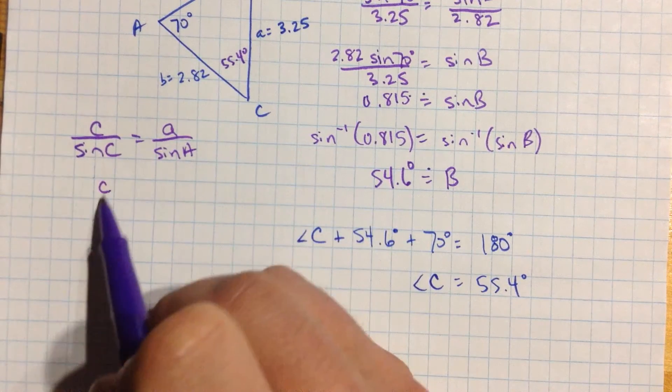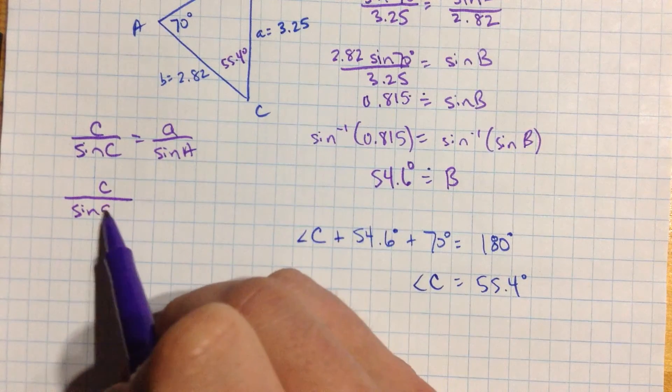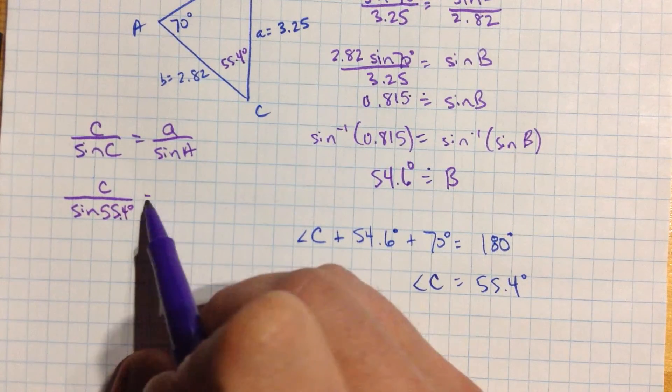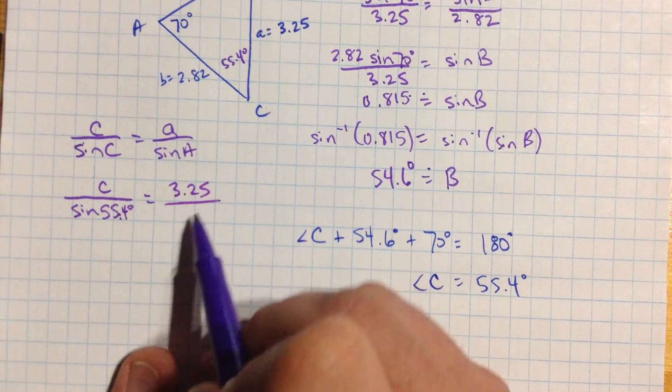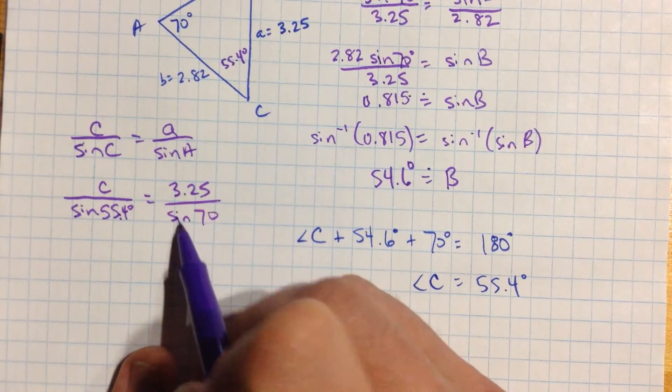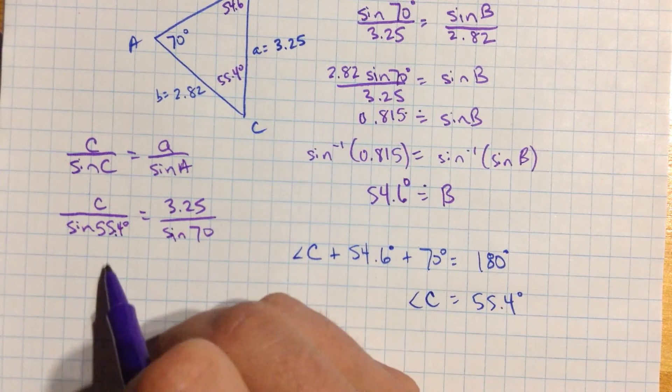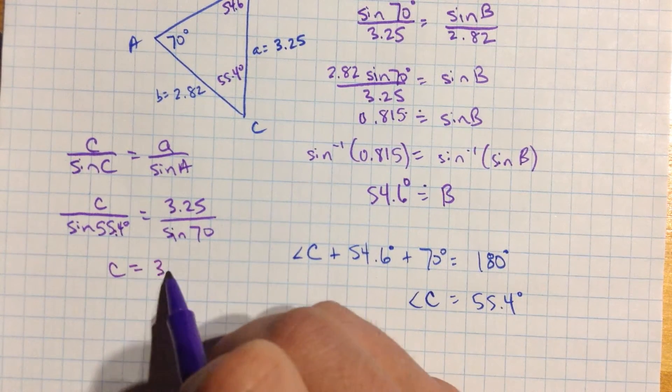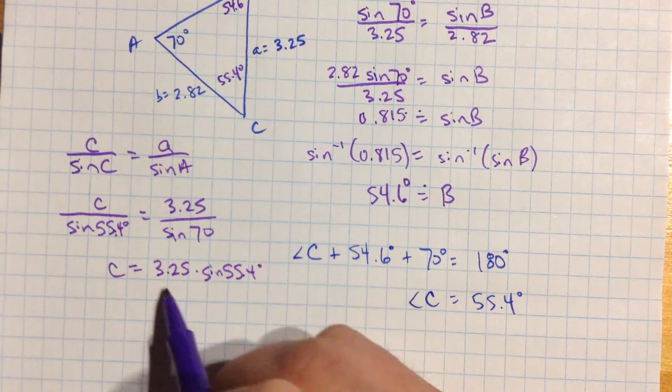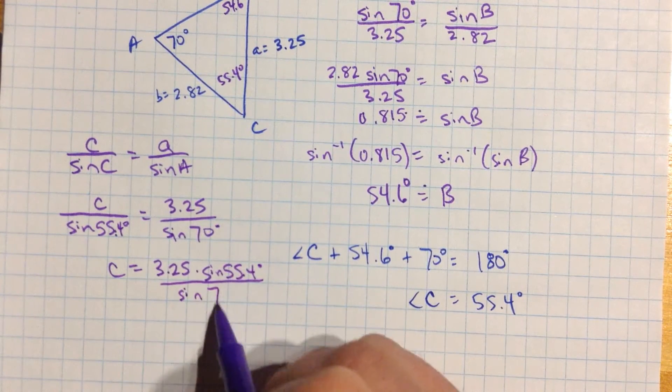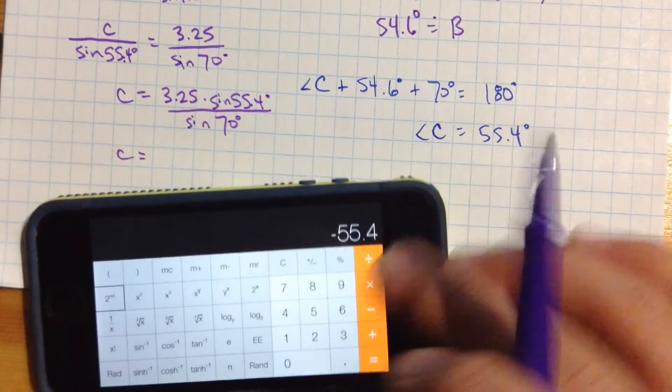Little c we don't know. Sine of c is the sine of 55.4 degrees, approximately. Little a is 3.25, and sine of 70 is sine of big A. So that means that c equals 3.25 times the sine of 55.4 degrees, all divided by the sine of 70 degrees. That seems calculator worthy to me.